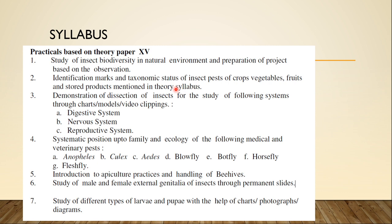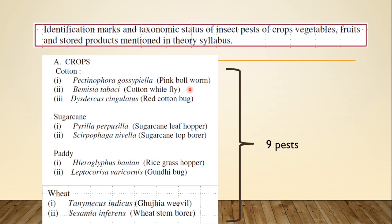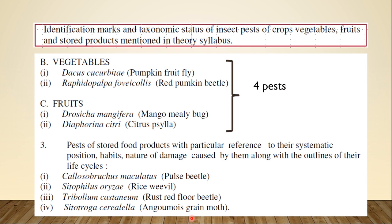For crops, you have been given 9 pests to study. For cotton: Pectinophora gossypiella (pink bollworm), Bemisia tabaci (cotton whitefly), and Dysdercus cingulatus (red cotton bug). For sugarcane: Pyrilla perpusilla (sugarcane leafhopper) and Scirpophaga nivella (sugarcane topborer). Pests of paddy are Hieroglyphus banian (rice grasshopper) and Leptocorisa acuta (gandhi bug). For wheat: Tanymecus indicus (gujia weevil) and Sesamia inferens (wheat stem borer). For vegetables and fruits: Dacus cucurbitae and Raphidopalpa foveicollis, also known as pumpkin fruit fly and red pumpkin beetle. For fruits: Drosica mangifera and Diaphorina citri — a total of 13 pests.